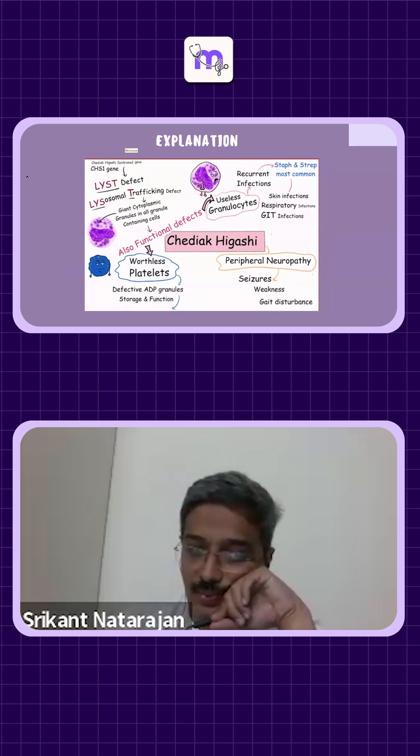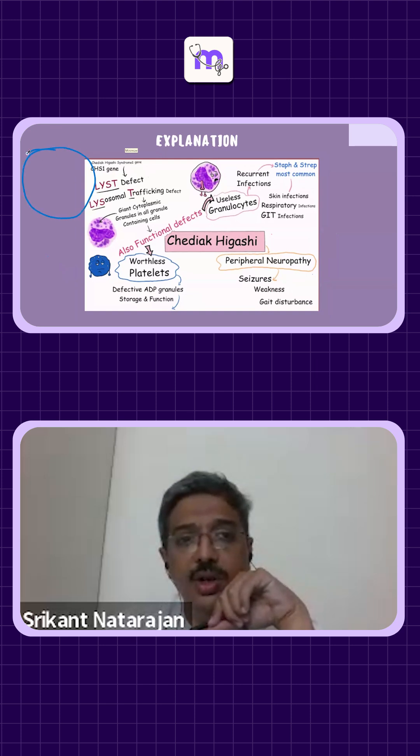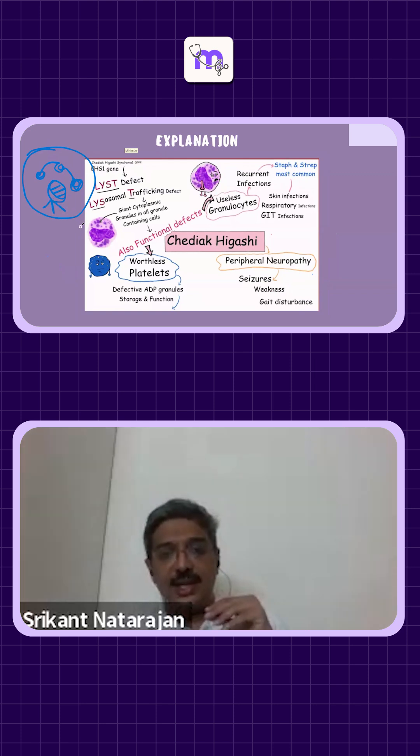So what are we talking about here? Whenever you have, let's draw a cell. Let's draw a neutrophil. So neutrophil has multiple lobes. Literally inside the lobes, they have a grill.